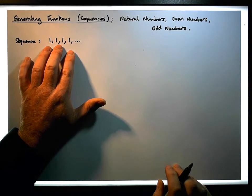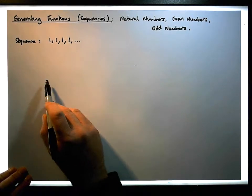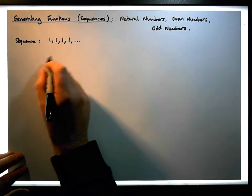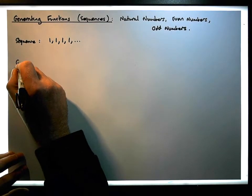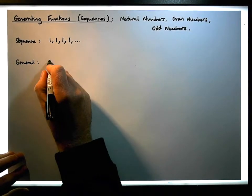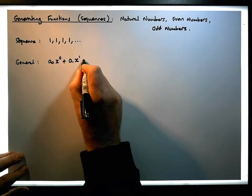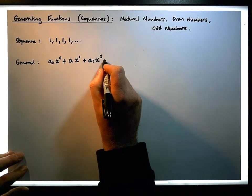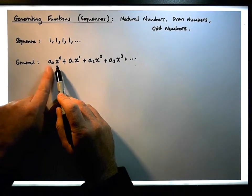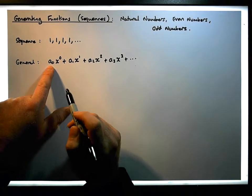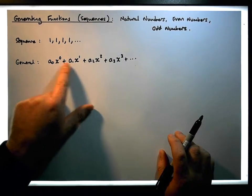In a previous video, we developed the generating function associated with this sequence. We had a number of steps: given a sequence, the first thing we do is generate its power series. A power series in general looks something like this: it's a-zero times x to the zero, plus a-one times x to the one, plus a-two times x to the two, plus a-three times x to the three, and so on. It's just a series of terms, and every term has a coefficient, an x, and a power associated with it.